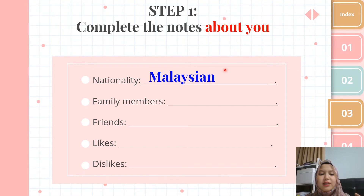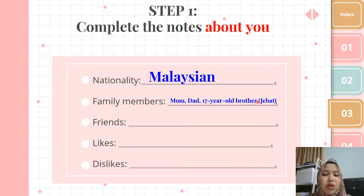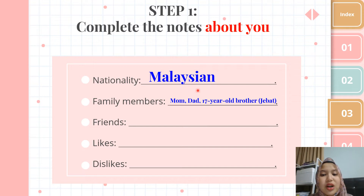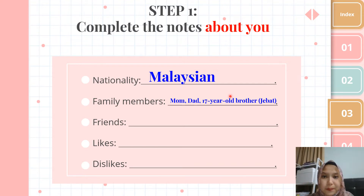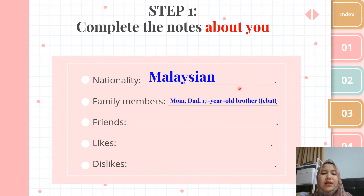For this example, the family members are three people: mom, dad, and a 17-year-old brother named Jebat. Like Claire Edwards, she stayed with her mom, dad, and a 12-year-old brother. I want you to also pick just one sibling because we are focusing on writing today — we don't want it to be too confusing. Just give me one sibling. If you are an only child, just pretend you have one.